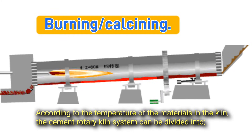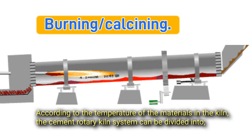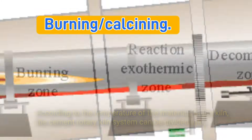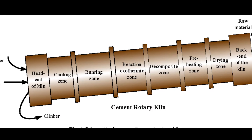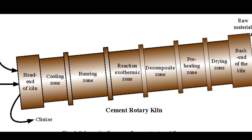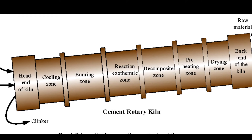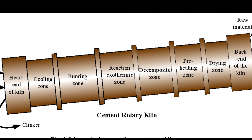Burning and calcining: according to the temperature of the materials in the kiln, the cement rotary kiln system can be divided into drying zone, preheating zone, decomposition zone, exothermic reaction zone, burning zone, and cooling zone.